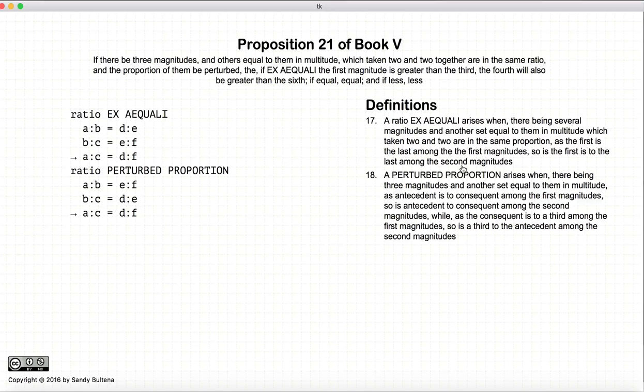Before we begin, we need to look at a ratio, I can't pronounce this so you'll just have to read it, and a perturbed proportion ratio. In this ratio, we have A to B is equal to D to E, B to C is equal to E to F, which implies that A to C is equal to D to F, and if you recall, that was Proposition 20.